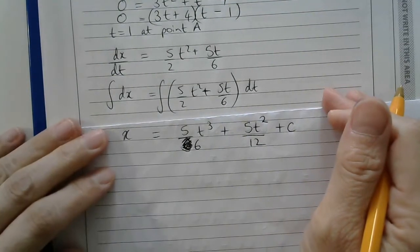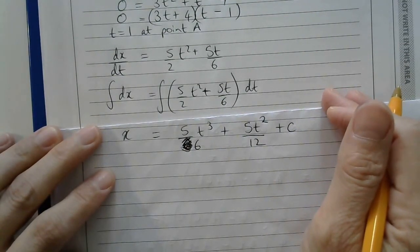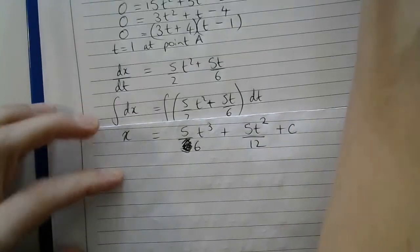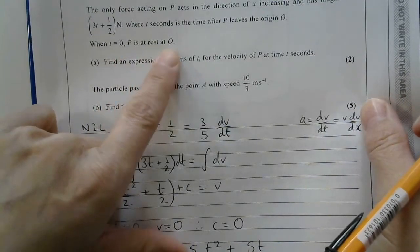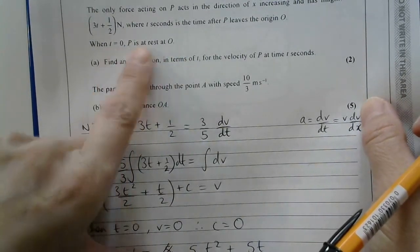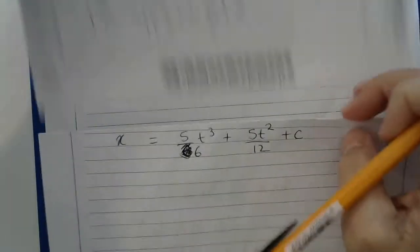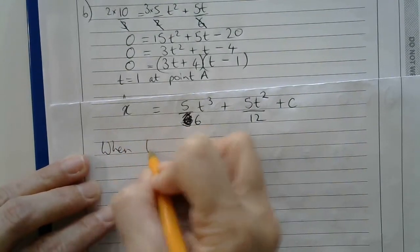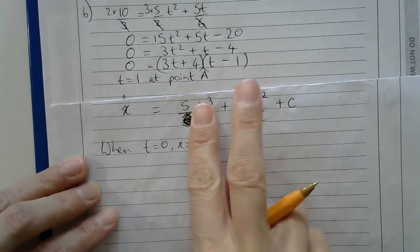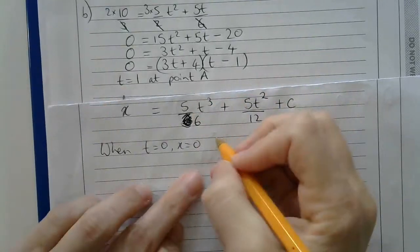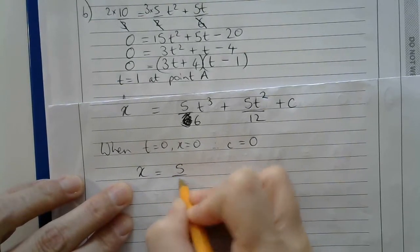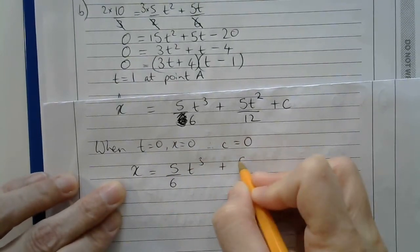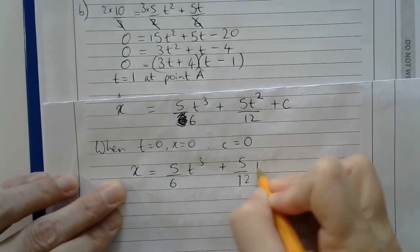And now I need to pop in some initial conditions. Well, the initial conditions come from here. They said when t is 0, p is at rest at o. So in other words, when t is 0, x is 0. So when t is 0, x is 0. If that disappears and that disappears and that disappears, I get that c is 0. So therefore, x will be 5/6 t cubed plus 5/12 t squared.